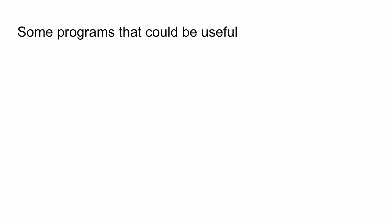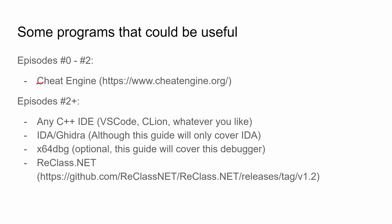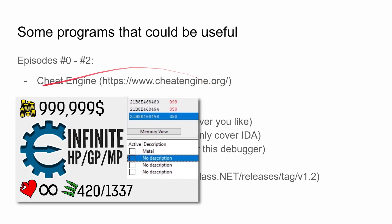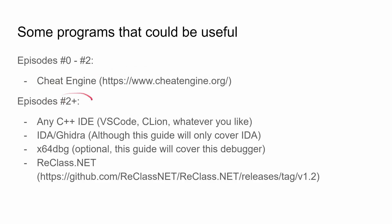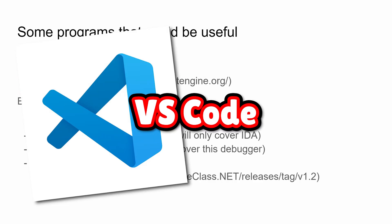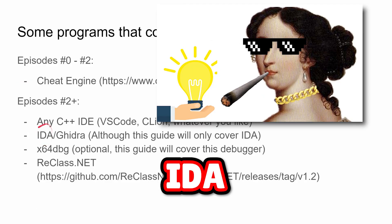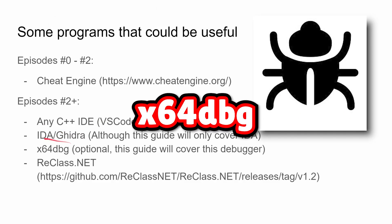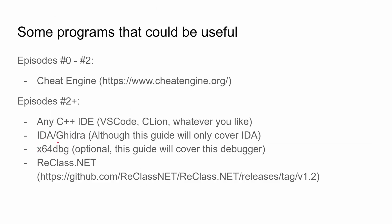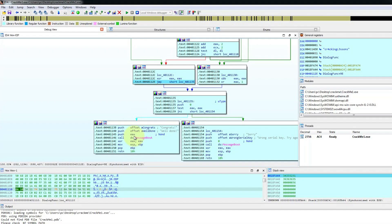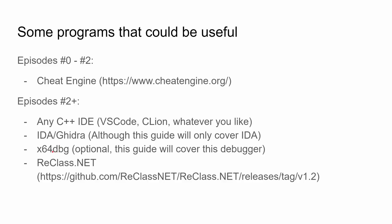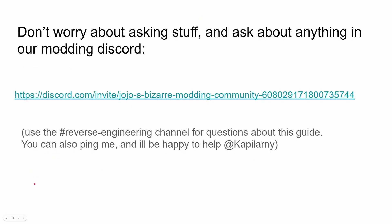So what programs could be useful? You need to install Cheat Engine, and that's it for episode one. For Episodes 2 and above: a C++ IDE — VS Code, CLion, whatever you like — IDA or Ghidra, and x64 Debugger. x64 Debugger is optional because you can use the debugger built into IDA or Ghidra, but I will only use this debugger in the guide.